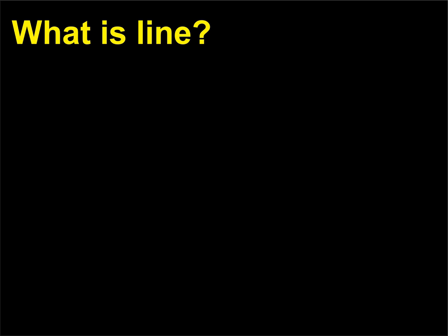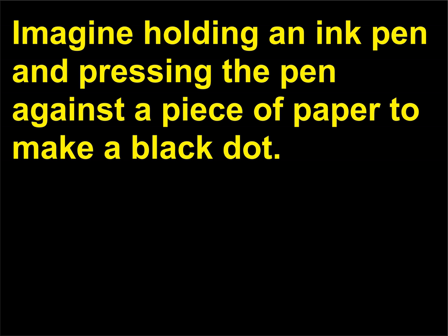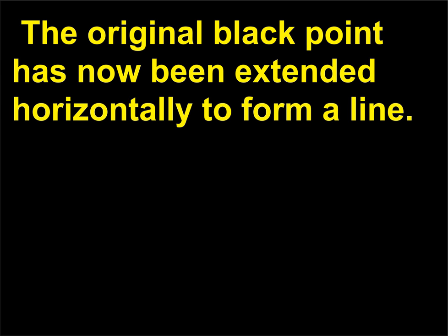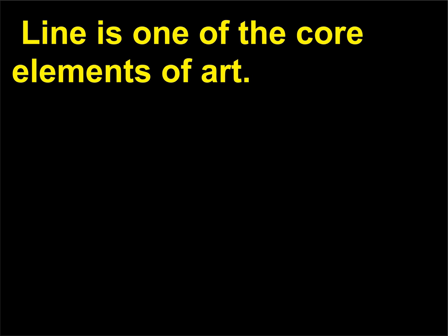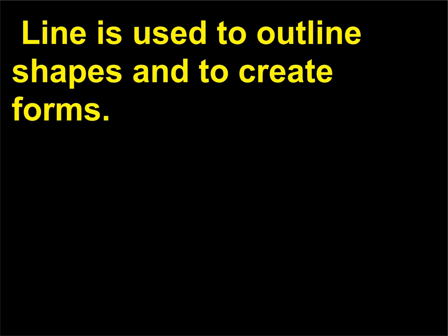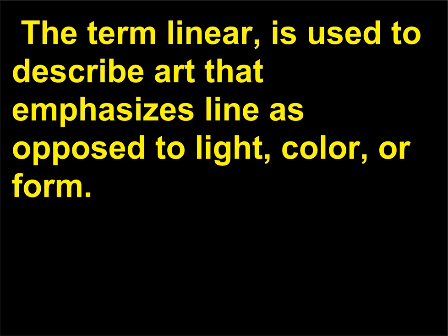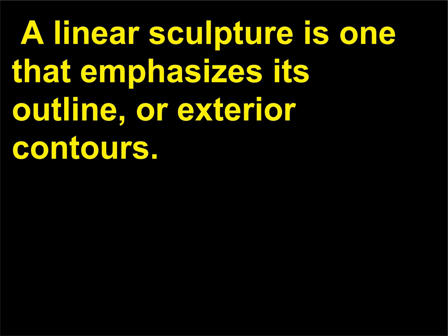What is line? Imagine holding an ink pen and pressing it against a piece of paper to make a black dot, then slowly dragging the pen across the page — the original point has now been extended horizontally to form a line. Line is one of the core elements of art, used to outline shapes and to create forms. The characteristics of a line convey feeling and emotion: a shaky line is vulnerable while a bold, straight line is powerful. The term 'linear' is used to describe art that emphasizes line as opposed to light, color, or form. A linear sculpture is one that emphasizes its outline or exterior contours.